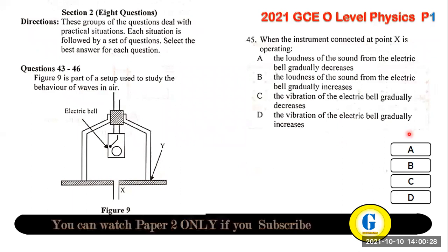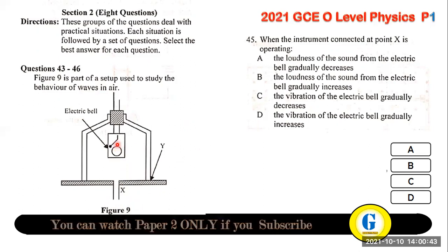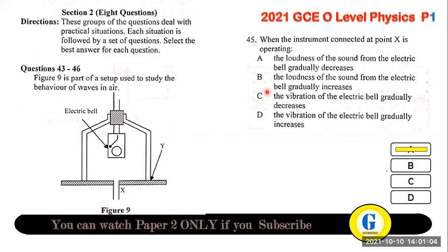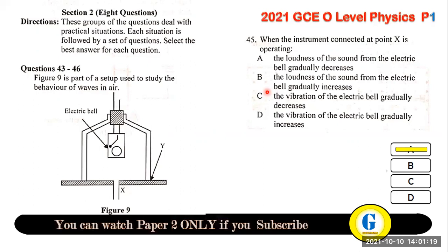Question 45: when the vacuum pump operates, the bell continues to ring but the loudness gradually decreases as air is removed. Eventually you can no longer hear the sound, though you can still see the bell ringing. This occurs because there is no material medium for sound to travel through.